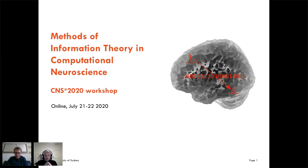The methods of information theory in computational neuroscience workshop is now in its 15th run at CNS. It's been going a long time, which is fantastic.